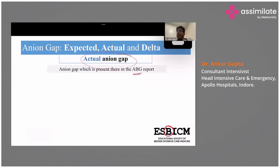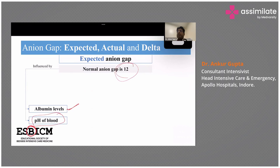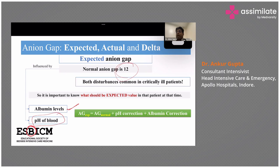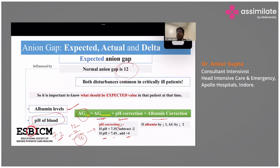The difference between actual and expected will decide whether it is high, normal, or negative anion gap metabolic acidosis. The expected normal anion gap is 12. But if your patient has a low albumin level or a changed pH, it can cause a difference. Expected anion gap = normal anion gap (12) + pH correction + albumin correction. For pH correction: if pH is less than 7.35, subtract 2; if pH is more than 7.45, add 4. So for a pH of 7.2, expected anion gap = 12 − 2 = 10. For alkalosis with hyperventilation, expected anion gap = 12 + 4 = 16. You then compare with 10 or 16, not with 12.